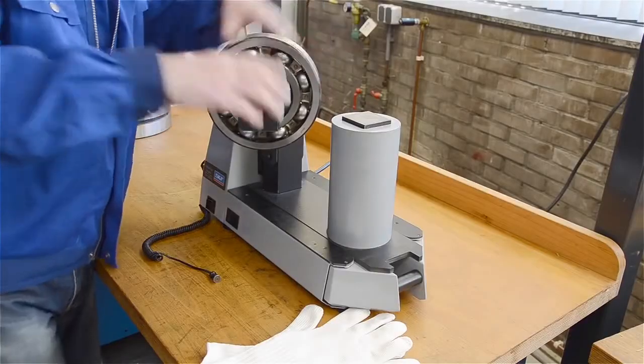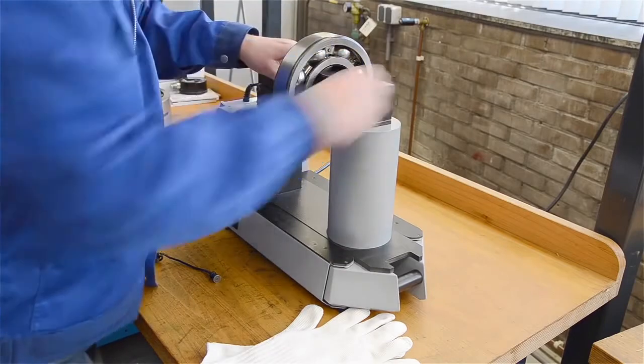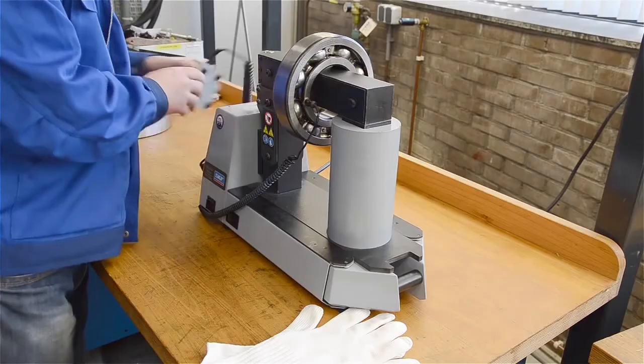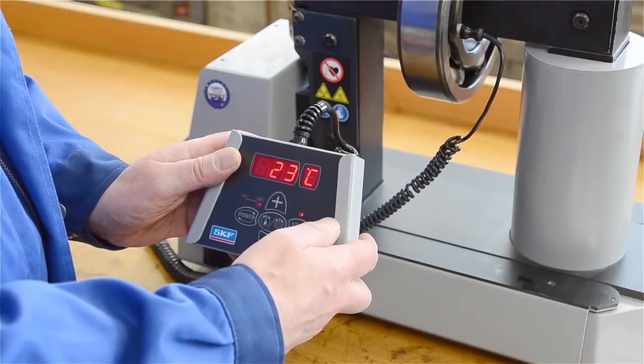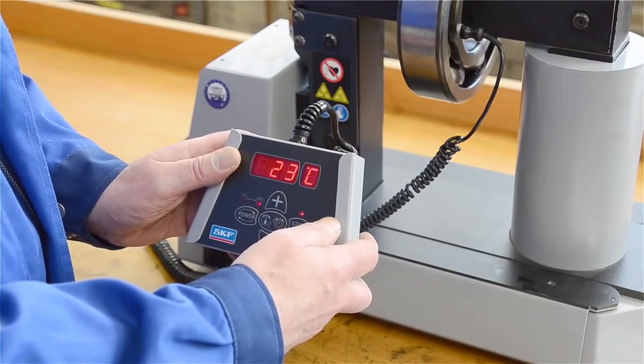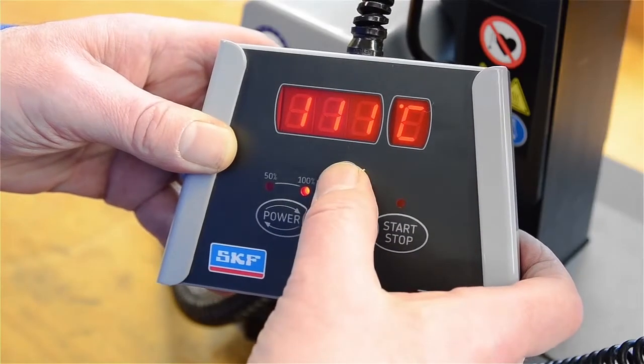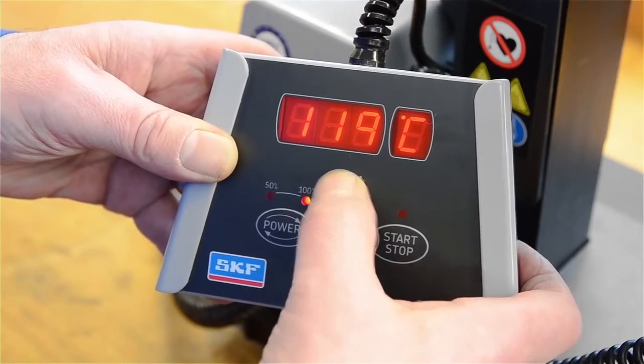Place the bearing on the heater and then place the temperature probe on the bearing inner ring. Press the start button on the remote control and the bearing starts heating. The preset temperature is 110 degrees Celsius, but you can also choose the temperature you want.